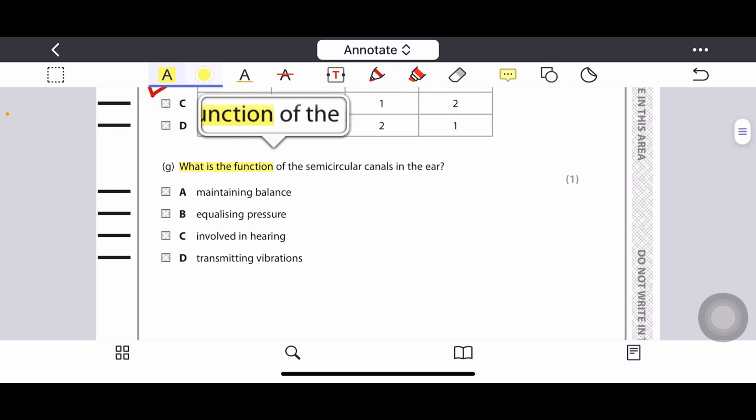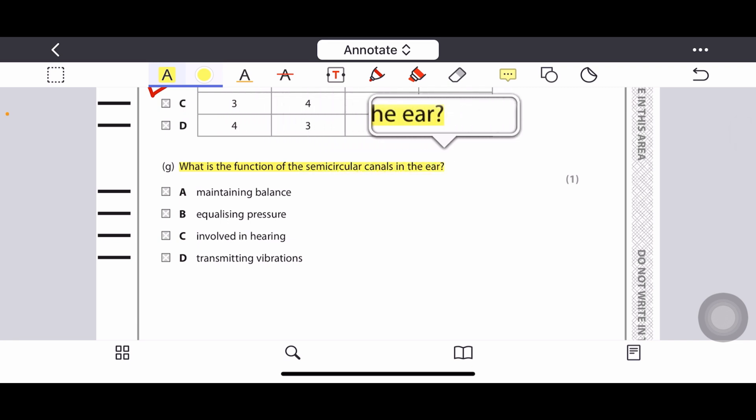What is the function of semicircular canals in the ear? Semicircular canals are best for maintaining balance of the body. Equalizing pressure? No. Involved in hearing? No. Transmitting vibrations? No. So maintaining balance is the best option.